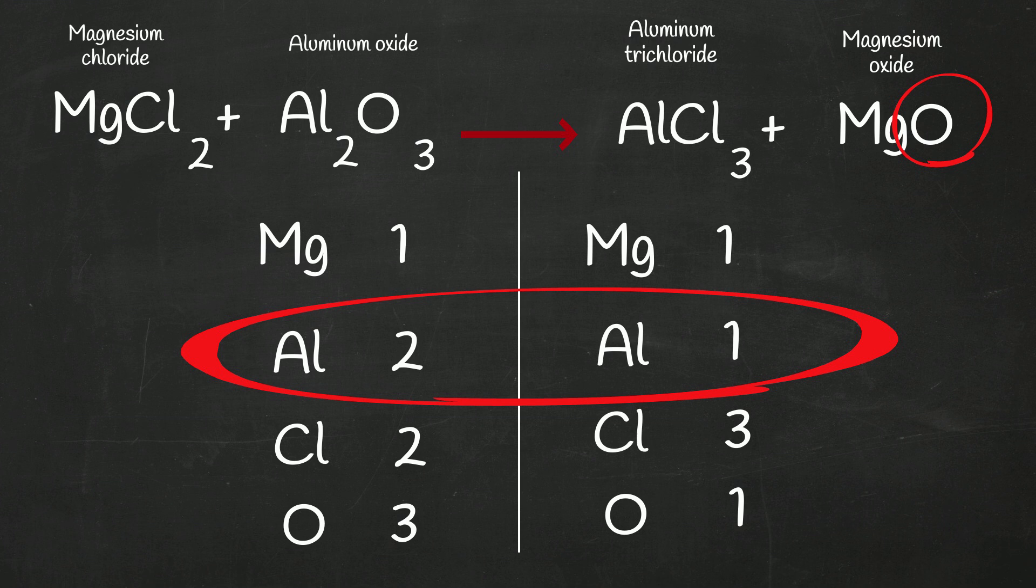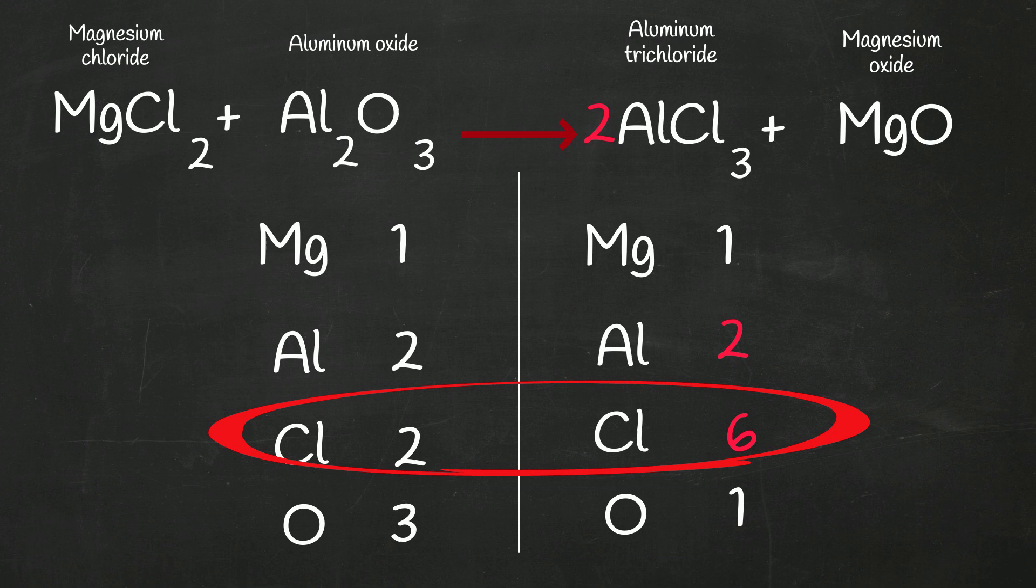So let's just add a two on the right to the aluminum trichloride. So when we multiply this, we now have two aluminums, and we have six chlorines. Okay, so far, so good. The aluminums are balanced, but look at chlorine. We have two and six.